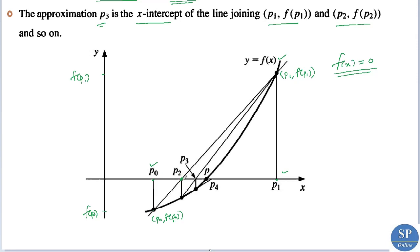To find P3, we need the functional value f(P2). This gives the point (P2, f(P2)). We then draw the line joining (P1, f(P1)) and (P2, f(P2)), and its x-intercept is taken as P3, and so on. In this manner, we obtain a sequence of points P0, P1, P2, etc., which converges to the actual root P.